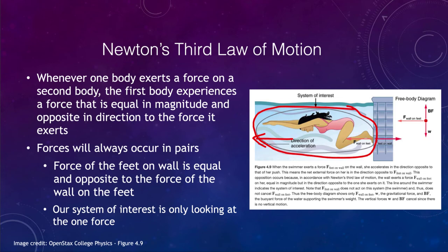While forces are always equal and opposite, we can consider this even when standing still. If someone is standing and exerting a force down on the floor, the floor must be producing an equal and opposite force on the person — because the person is not accelerating in the vertical direction. If the floor produced a higher force, the person would have a net force upward and start to rise. If the person's weight was larger than the floor's force, they would fall through. All forces are equal and opposite, but which ones we consider depends on our system.